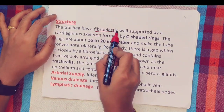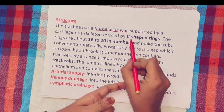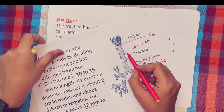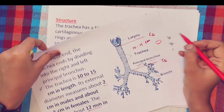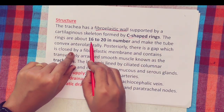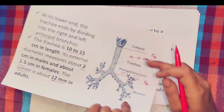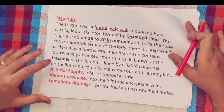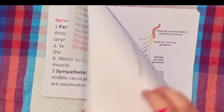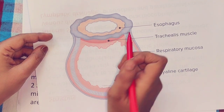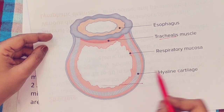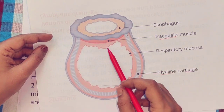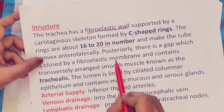Structure of the trachea: it is made up of a fibro-elastic wall containing C-shaped hyaline cartilage rings. The cartilage is present anteriorly but absent posteriorly, which is why it is C-shaped. There are 16 to 20 such rings in the trachea. The posterior gap is closed by a fibro-elastic membrane containing a smooth muscle called the trachealis muscle.